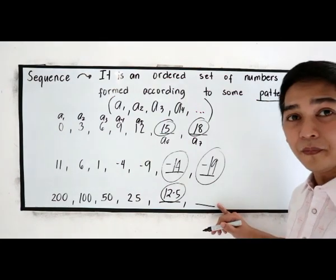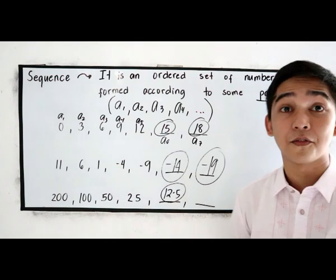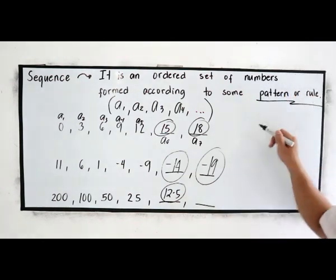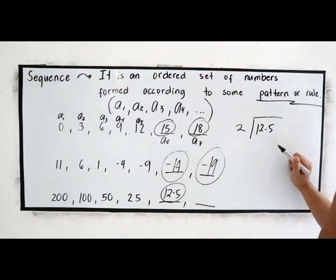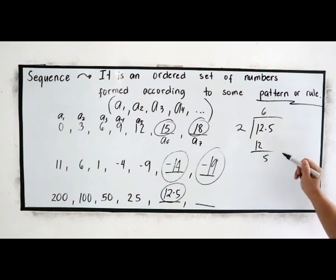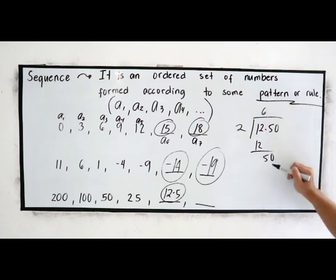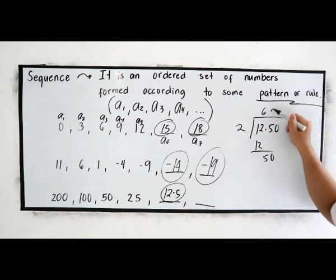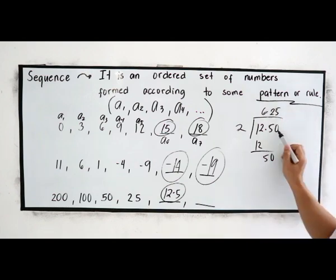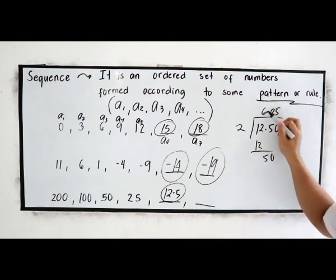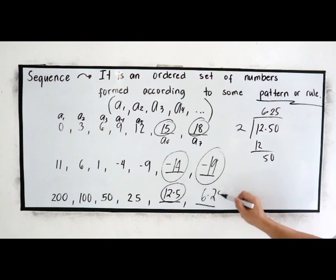To get the next term, 12.5 divided by 2. So 12.5 divided by 2. So that is 6, 12, bring down 5, then 0, 0, then 50 divided by 2, 25. So 2 decimal, 1, 2, period. So 6.25.